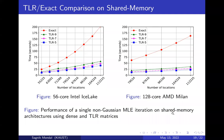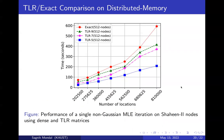We compare the performance of the exact implementation with tile low rank at different accuracies on two shared memory architectures: a 56-core Intel Ice Lake and a 128-core AMD Milan, with number of locations on the X-axis and likelihood computation time on the Y-axis. Additionally, we compare exact computation with tile low rank computation for different accuracies on a distributed memory system, again with number of locations on the X-axis and likelihood computation time on the Y-axis.